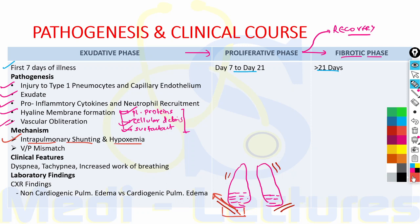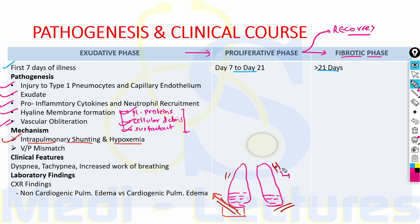In other areas with normal alveoli, the adjacent pulmonary arteries may have microthrombi formation and microvascular occlusion. This creates dead space. These alveoli are ventilated but not perfused, resulting in ventilation-perfusion mismatch and increased pulmonary hypertension.